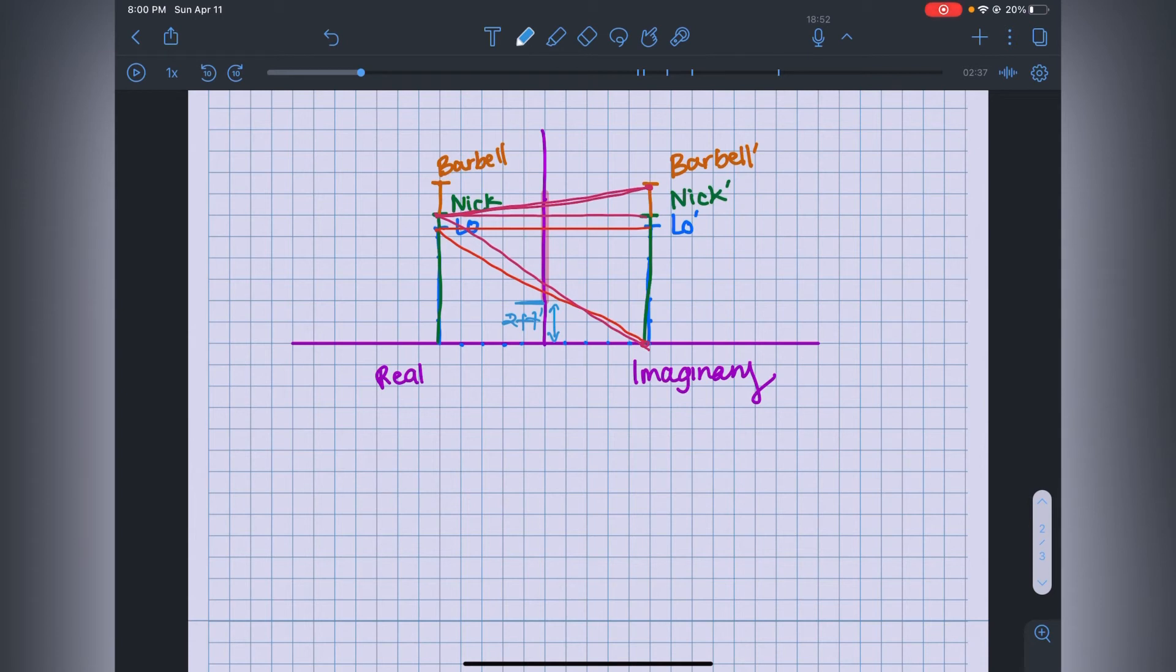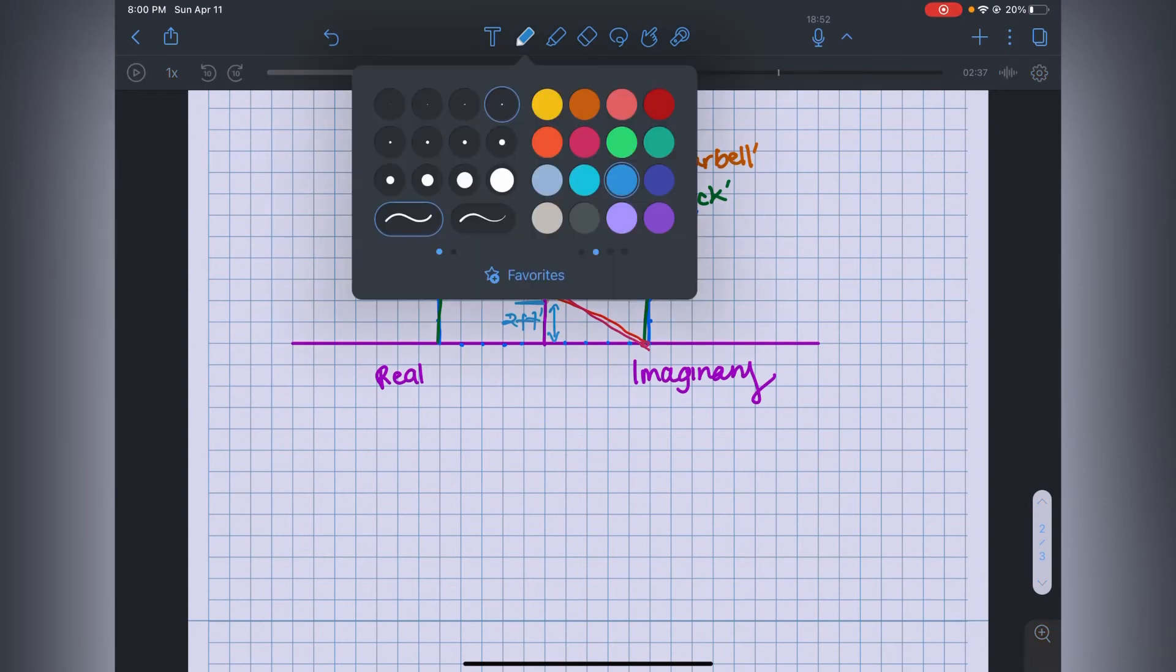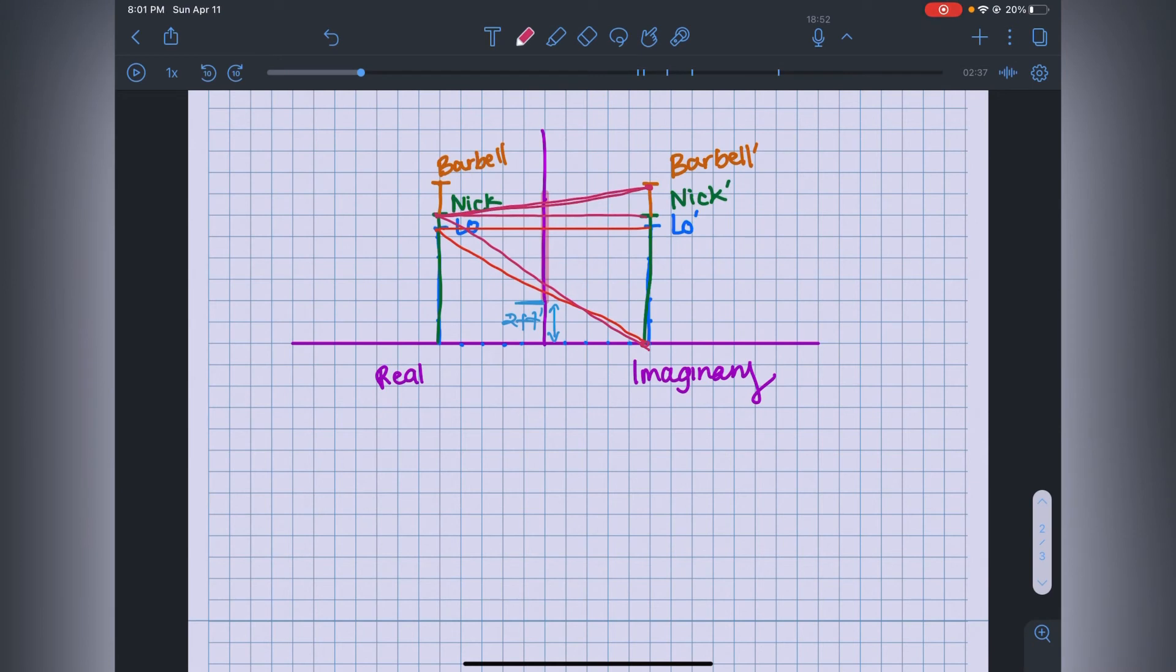The cool thing is you can actually scale this and figure out what is going to be the breaking point for when you will no longer see the barbell and when you're no longer going to see your feet. You can say that you're standing further out. Ignore this if this is confusing, you can just skip forward. I'll undo everything.